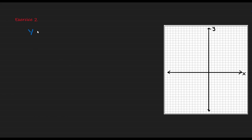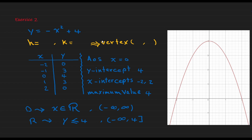Now try to graph y = -x² + 4 by yourself, then play again to check your answer. Comparing to the vertex form, there is no value inside the parentheses so h = 0, and the number outside is 4 so k = 4. This means the vertex is at (0, 4). I construct a table centered around the vertex, with two points on each side.